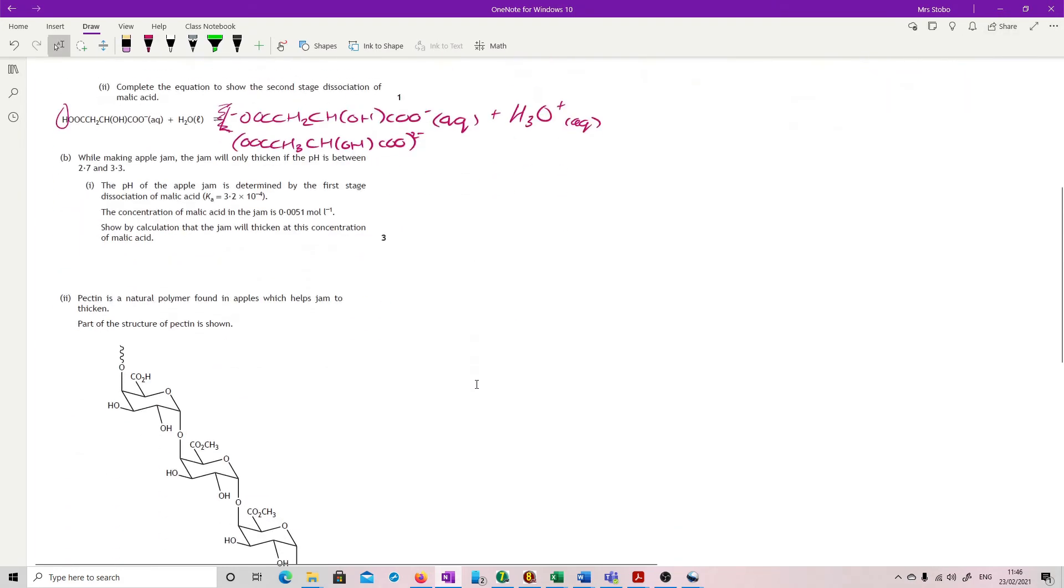While making apple jam, the jam will only thicken if the pH is between 2.7 and 3.3. The pH of the apple jam is determined by the first stage of dissociation of malic acid. Concentration of malic acid in the jam is given here as well. Show by calculation that the jam will thicken. So what we're looking for is to calculate the pH and then see if it falls between 2.7 and 3.3.